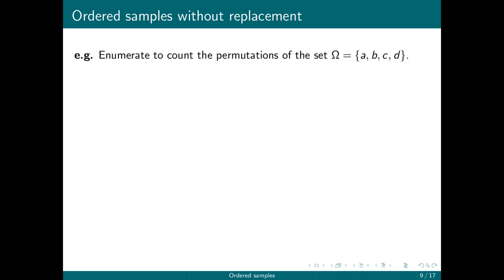We're going to do an example, count how many there are, and see if that gives us an idea of what the formula is supposed to be. I'm going to enumerate the permutations of the set A, B, C, D. We're going to have some sort of system — I usually start with the A's, then B's, C's, and D's.